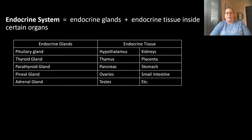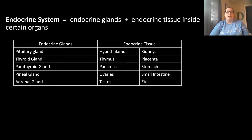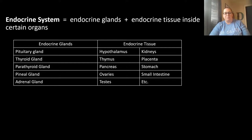The endocrine system consists of endocrine glands plus endocrine tissue, because sometimes it's not just a gland but a set of tissue inside a particular organ that normally has a different job. Endocrine glands include the pituitary, thyroid, parathyroid, pineal, and adrenal. Endocrine tissue is found in the hypothalamus, thymus, pancreas, ovaries, testes, kidneys, placenta, stomach, and small intestines, among others.